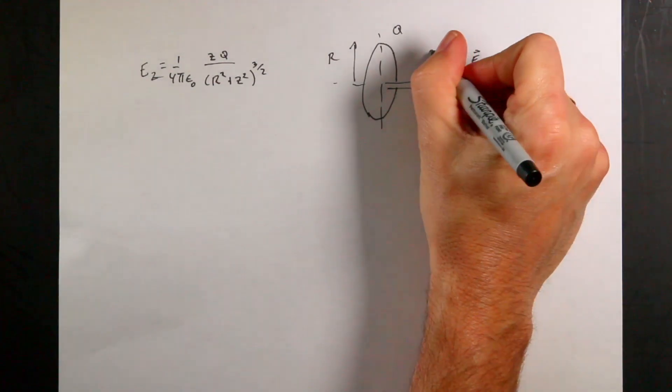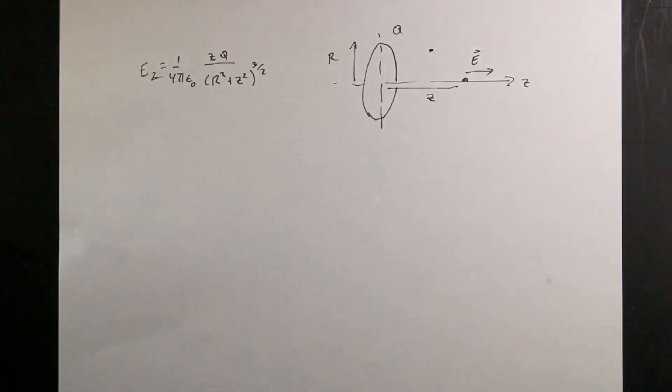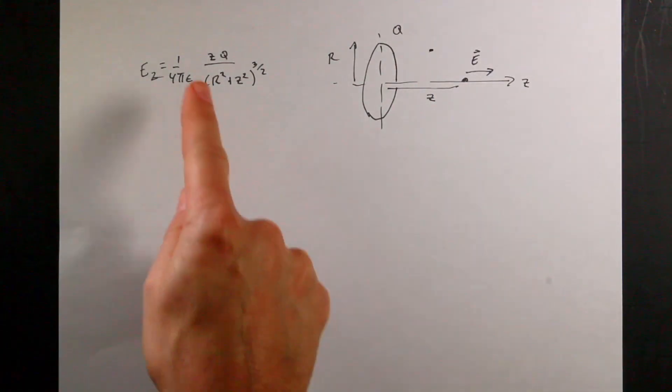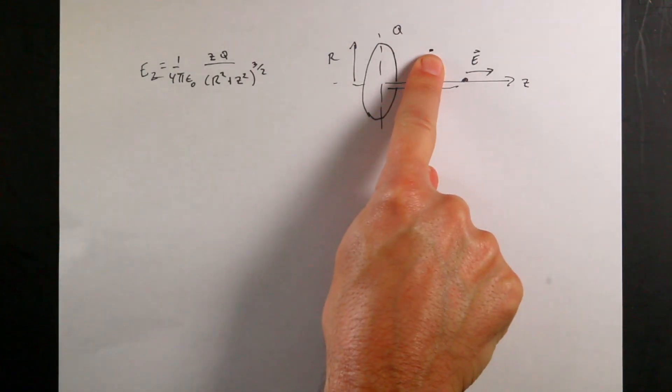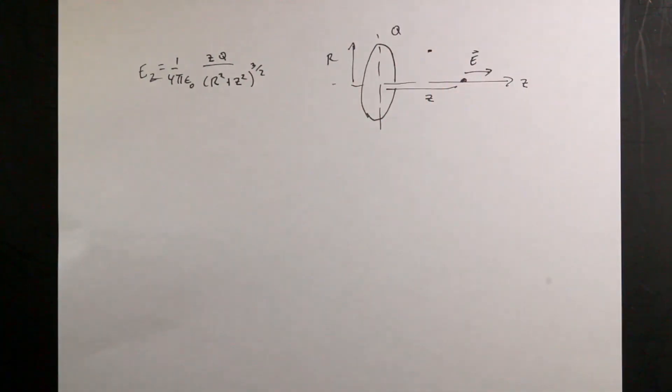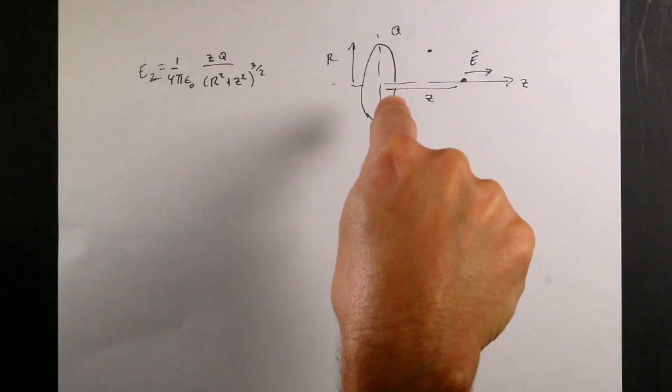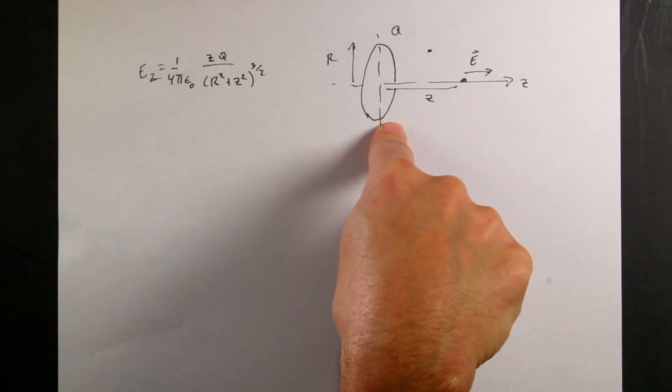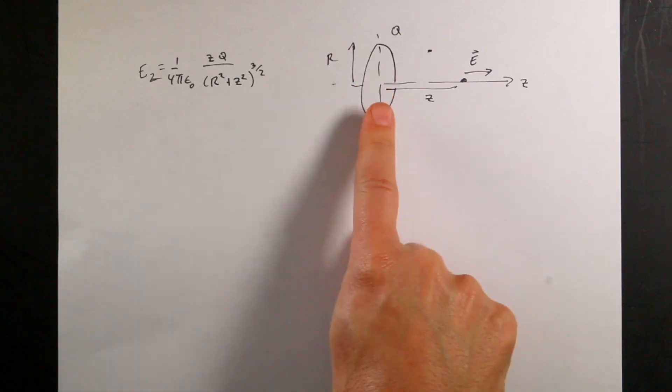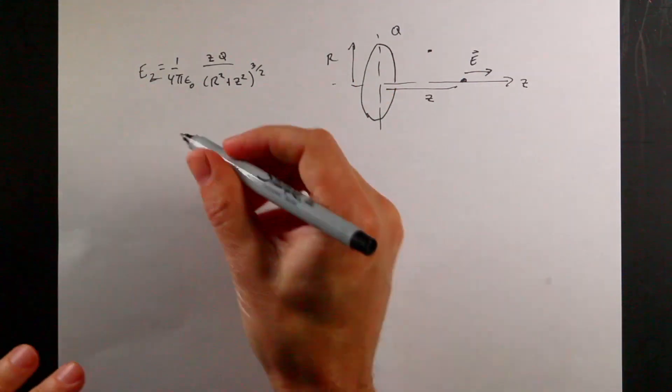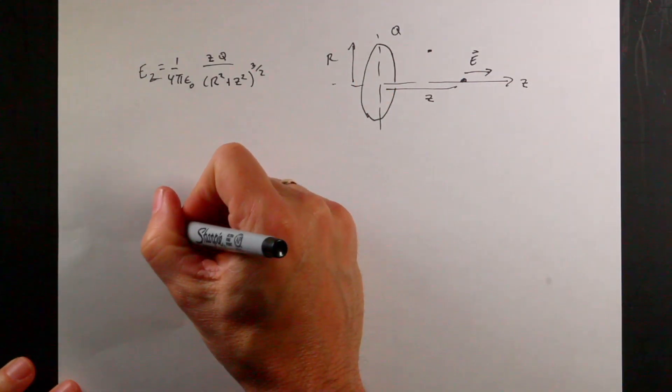But what if I'm right here? How do I find the electric field there? This equation doesn't work because that's not on the axis of the ring. So we have to do it a different way. We're going to break this ring into a finite number of individual point charges and calculate the electric field due to each point charge.